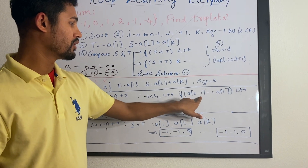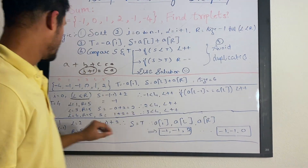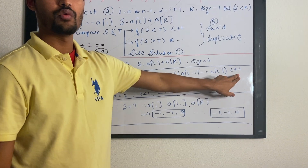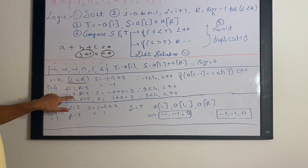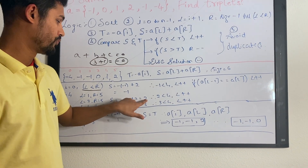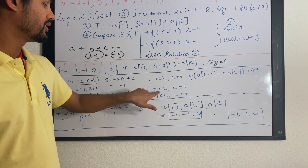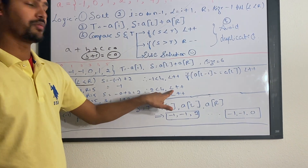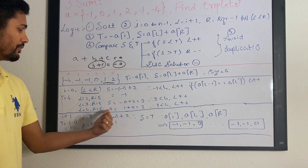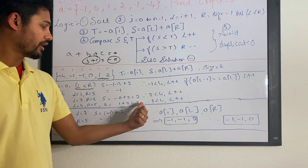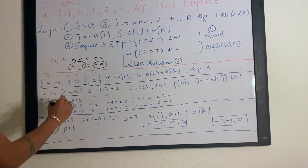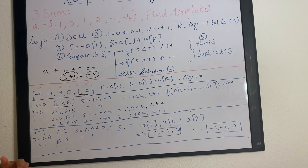To avoid duplicates, we check if A[L-1] equals A[L]. Since both are -1, we skip and increment L again, making L equal to 3. When L is 3 and R is 5, sum is 0 + 2 = 2, which is still less than 4, so we increment L to 4. When L is 4 and R is 5, sum is 1 + 2 = 3, still less than 4, so we increment L to 5. Now L is not less than R, so we exit the first iteration.